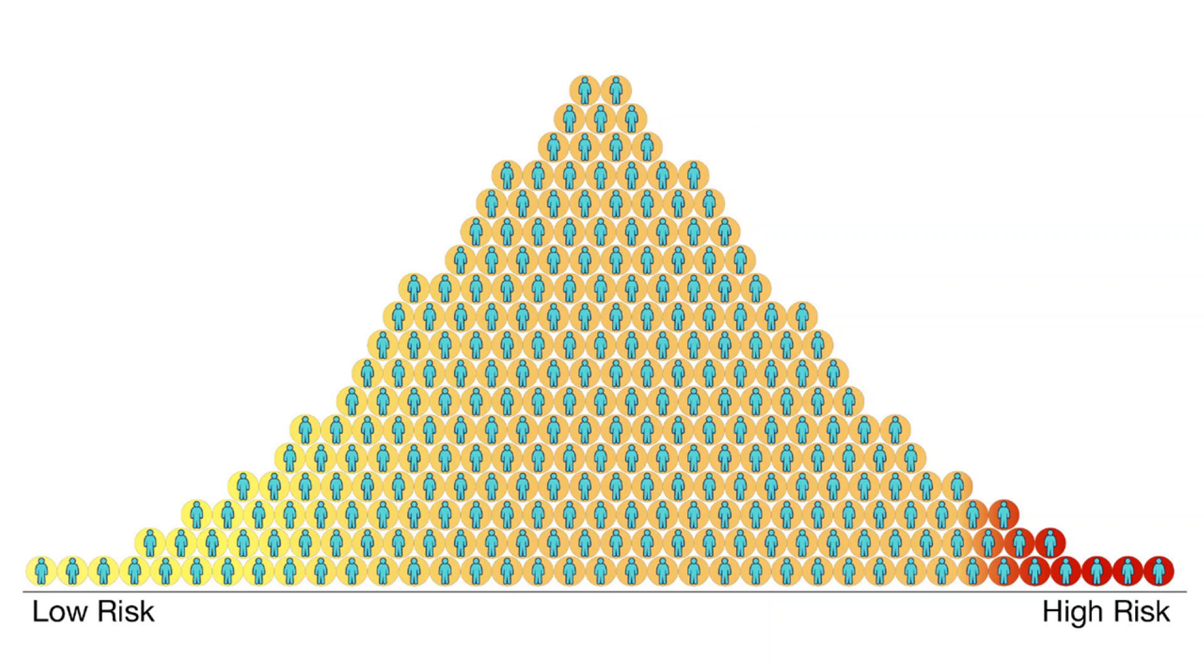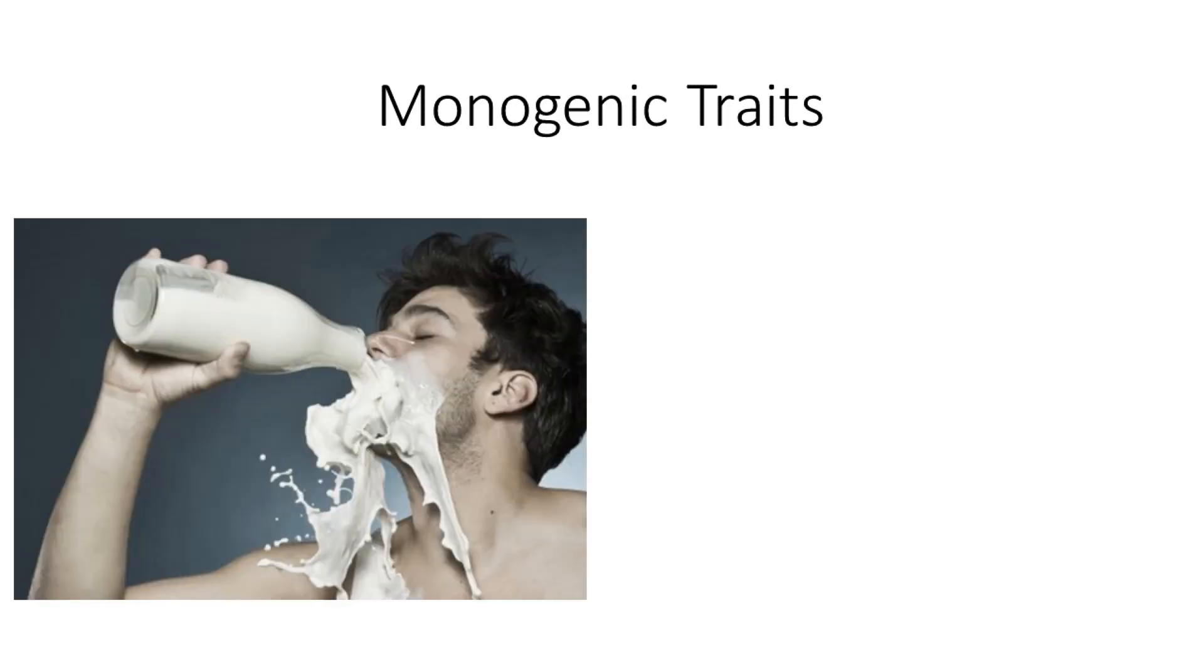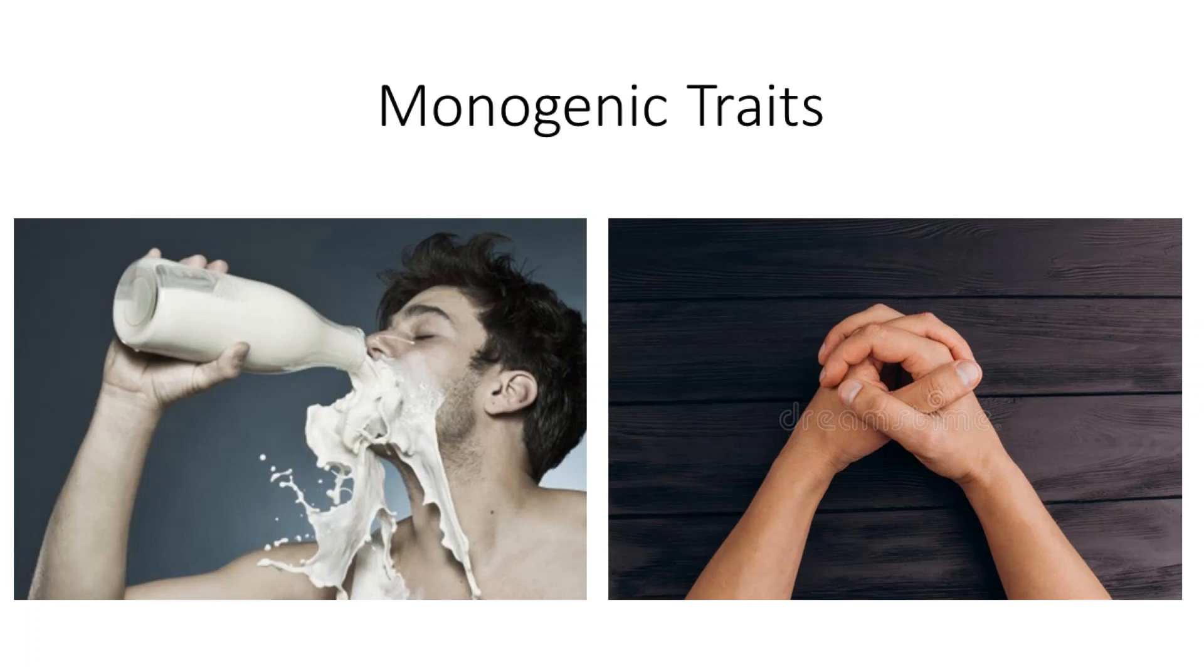There are certain traits which are determined by the presence or absence of genetic variants in a single gene. These are called monogenic traits and include traits such as lactose intolerance and, peculiarly enough, which thumb goes on top when you interlock your fingers.